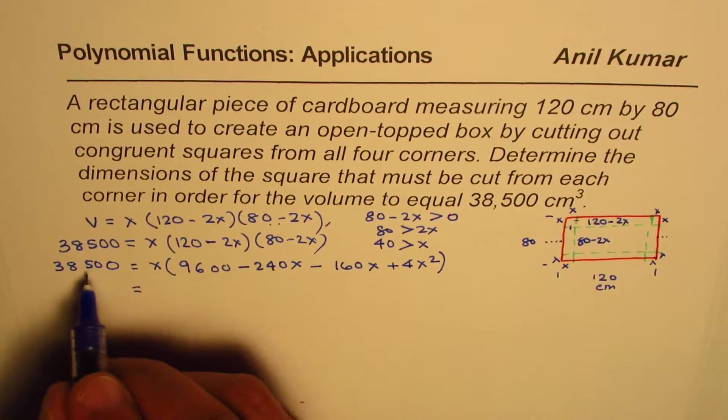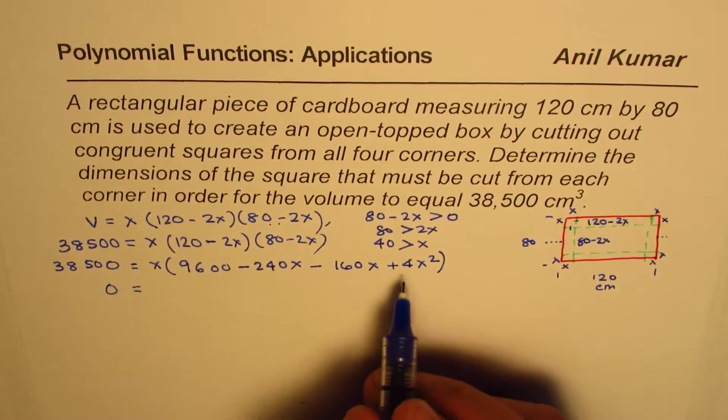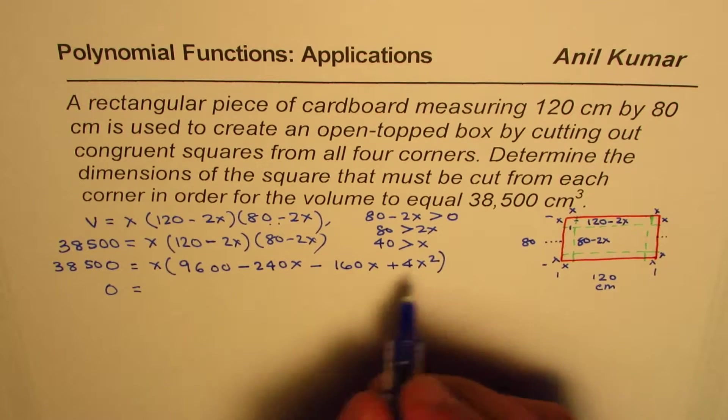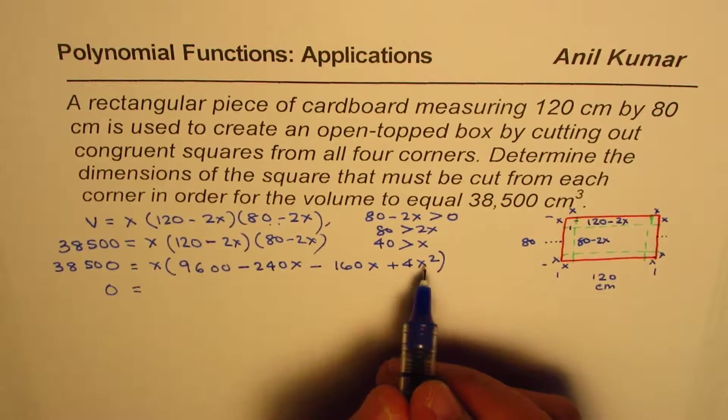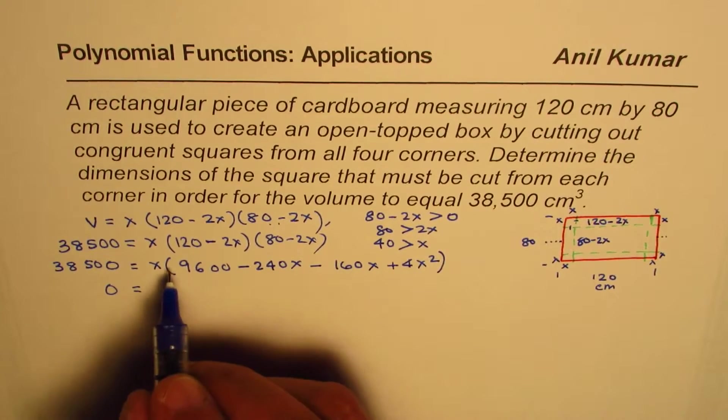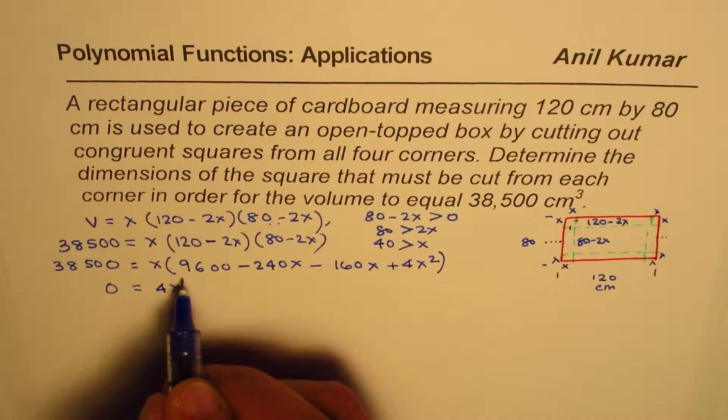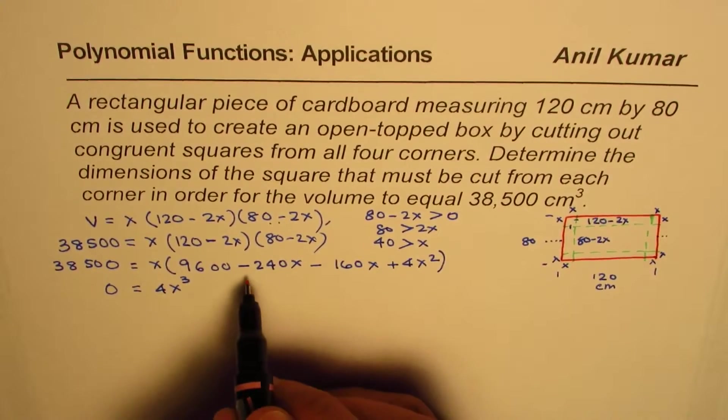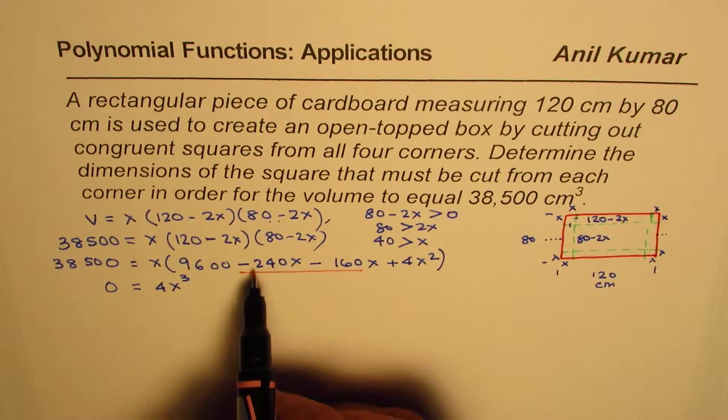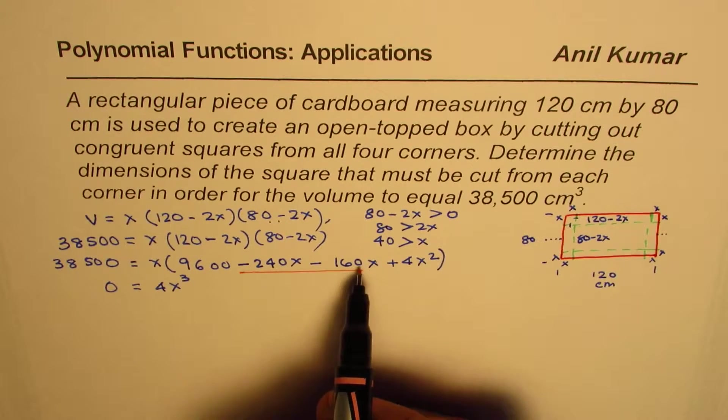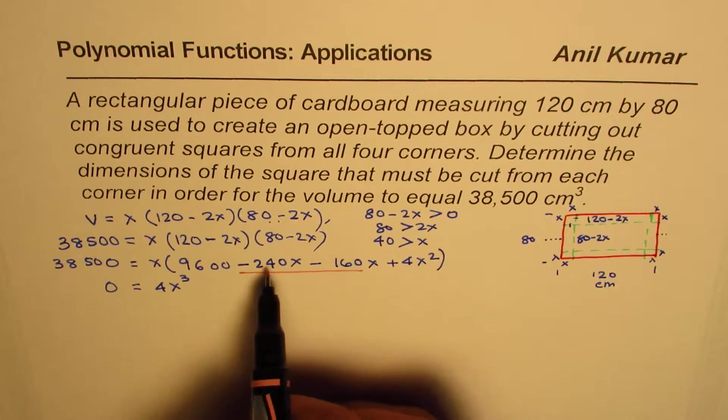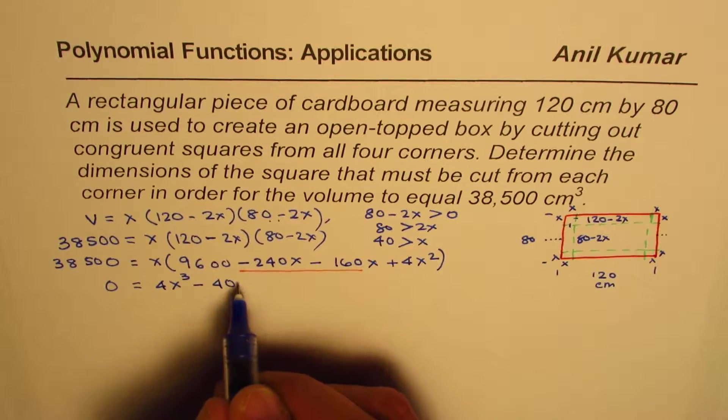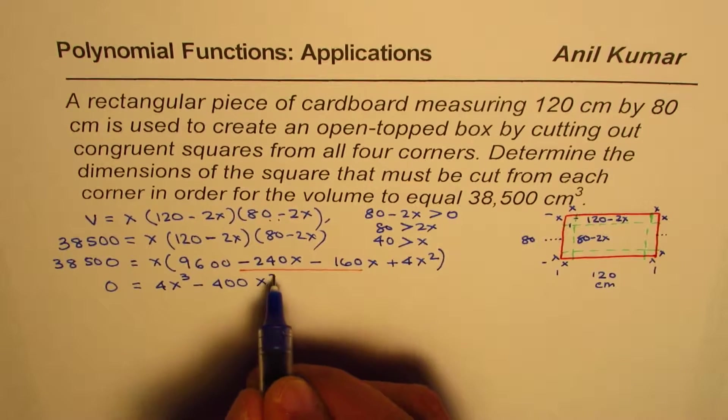Let me first write 38,500. We'll later take it to the right side. So now we'll take it to the right side. Let me open this up. So we have X times 4X squared. Here, I'm trying to write the terms with highest degree first. So X times 4X squared is 4X cubed. We'll combine these two.